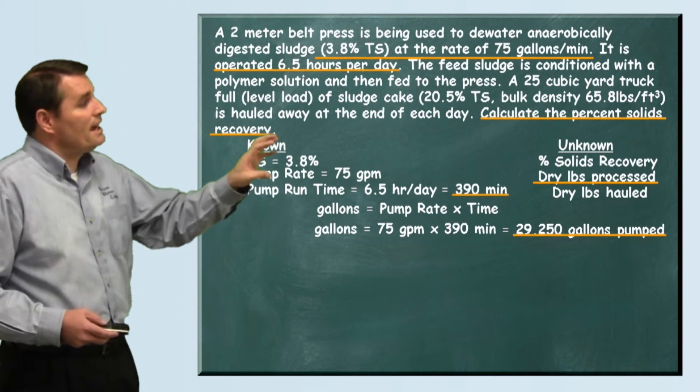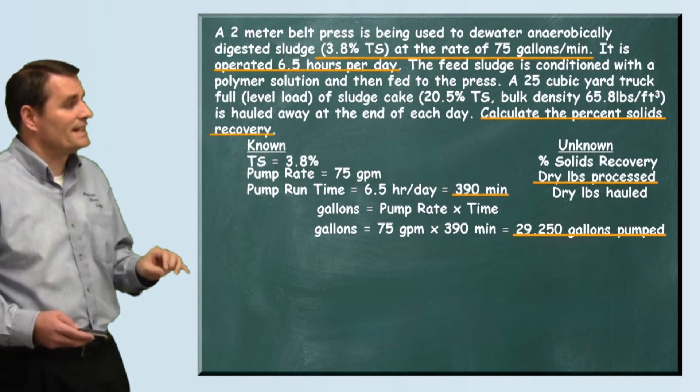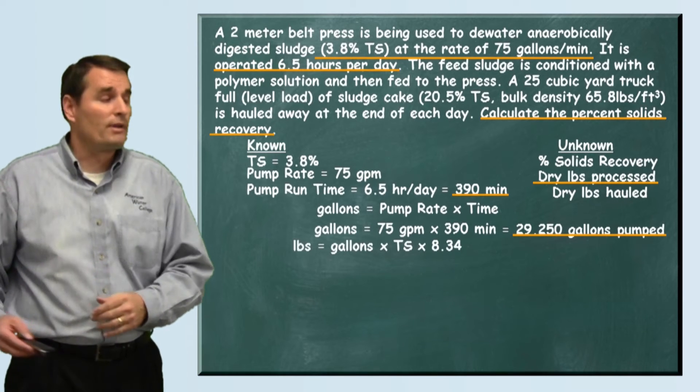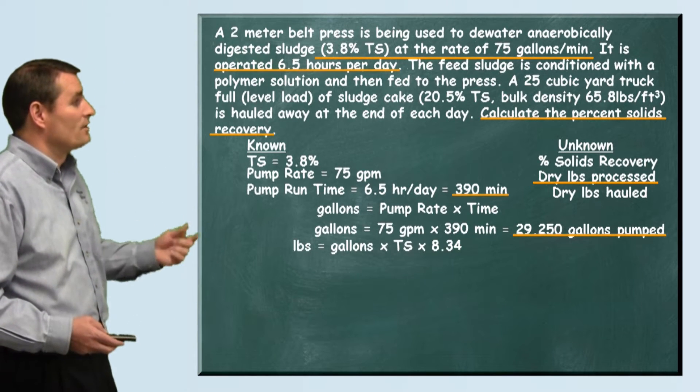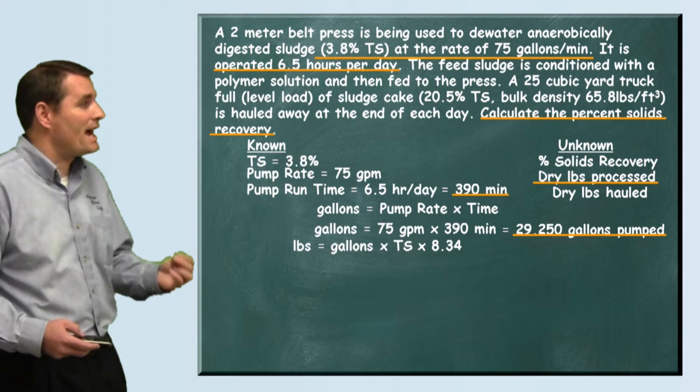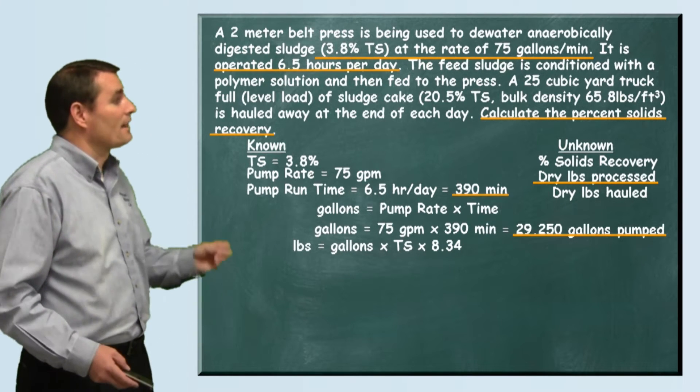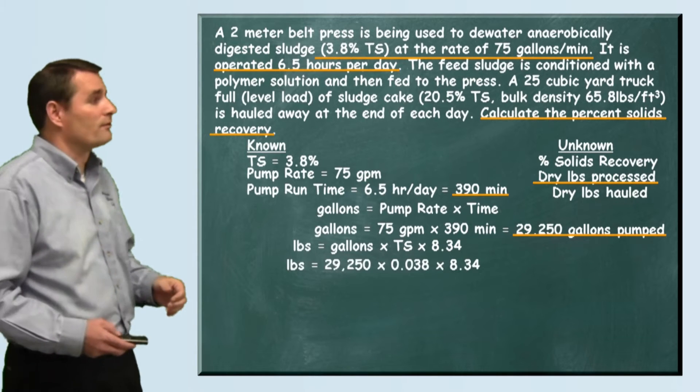We can take our 29,250 gallons and now calculate how many pounds of dry sludge are being processed. We do that by using our formula that says pounds equals our gallons pumped times the total solids times 8.34.